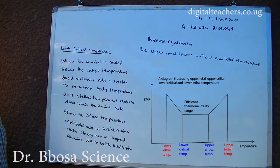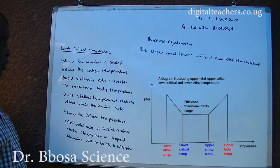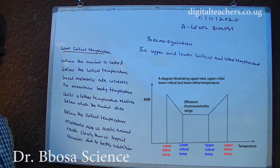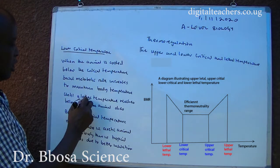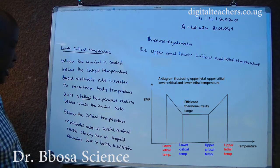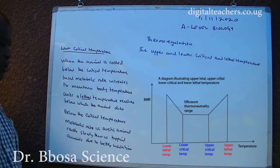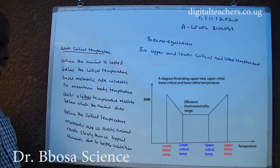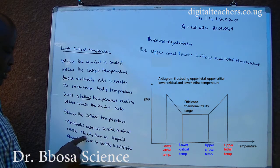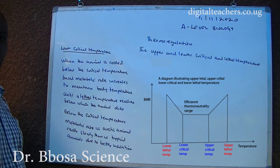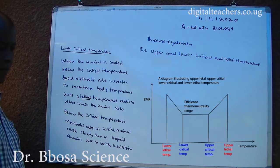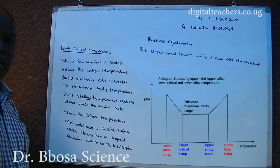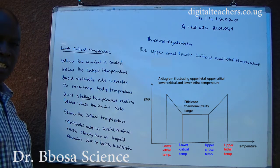When the animal is cooled below the lower critical temperature, the basal metabolic rate increases to maintain body temperature until it reaches a lethal temperature below which the animal dies. The metabolic rate in Arctic animals raises at a lower level than in tropical animals due to better insulation — Arctic animals have thick fat and large subcutaneous fat deposits.